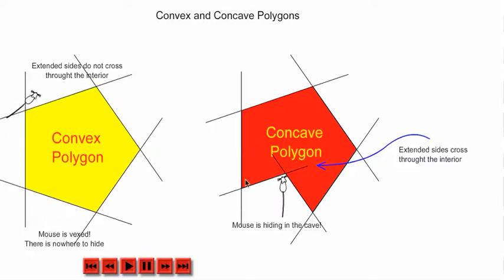And you can have more than two cross in, by the way. So a concave polygon is any polygon where the extended sides cross through the interior. And that's the difference between convex and concave polygons.